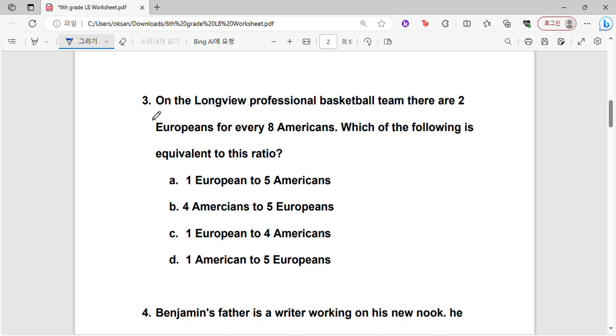Third question: on the Longview professional basketball team, there are 2 Europeans for every 8 Americans. Which of the following is equivalent to this ratio? So 2 Europeans for every 8 Americans. Now let's simplify this. We divide 2 on both sides, we get 1 to 4. So 1 European to 4 Americans. So C is the correct answer.